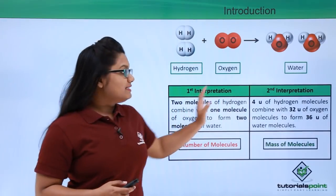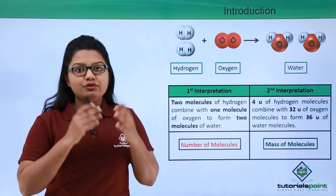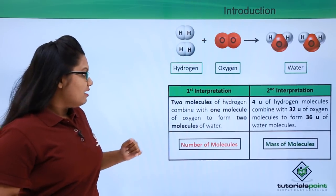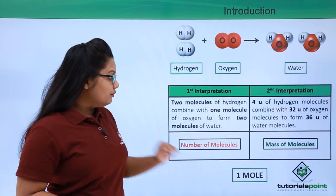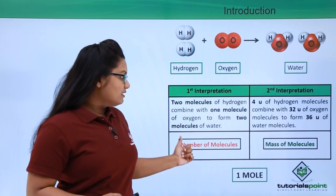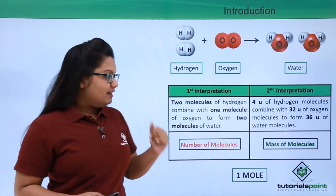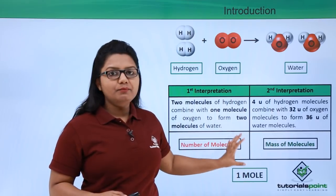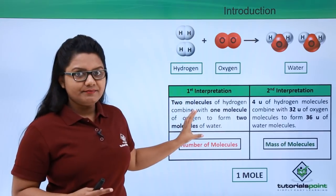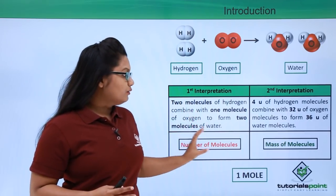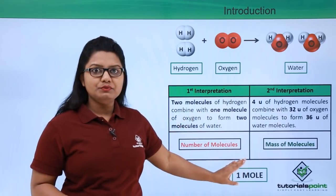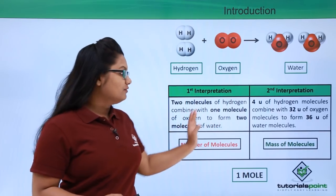These are two equally convenient ways to represent the amount of a substance involved in a reaction — in terms of number of particles, and in terms of mass. That's the reason why a new unit, mole, was introduced, which encloses both. By saying we have one mole of a substance, we mean a fixed number of particles and also a fixed mass of that substance.